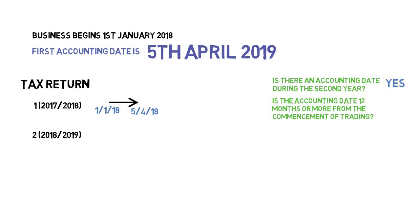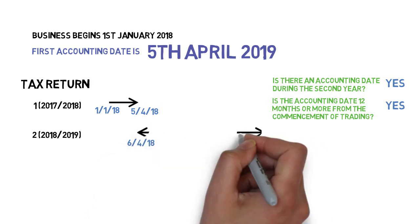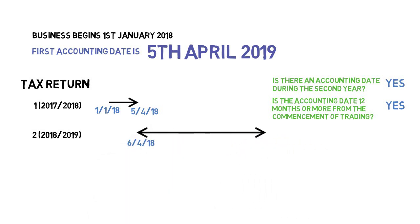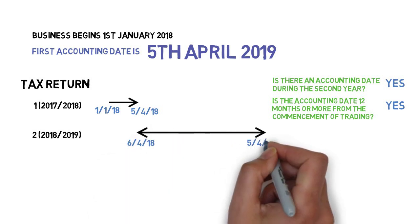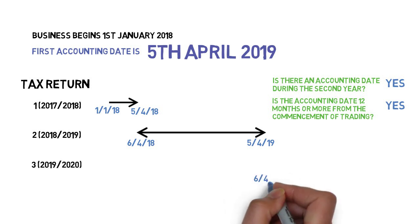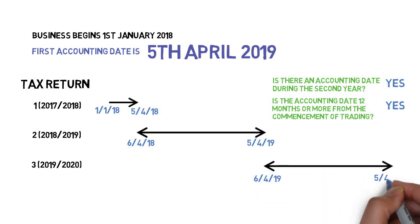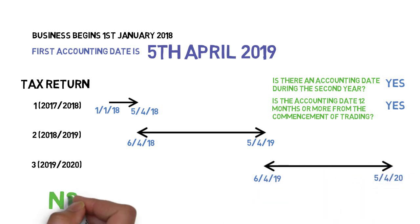But look what happens. Year two's basis period runs from 6th of April 2018 until 5th of April 2019. There is no overlap period, and now the basis period and accounting year are already aligned — meaning that there won't be any overlap periods in the future either.